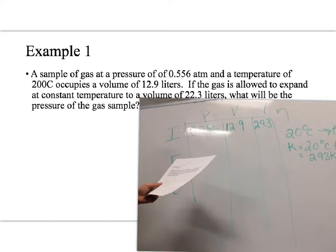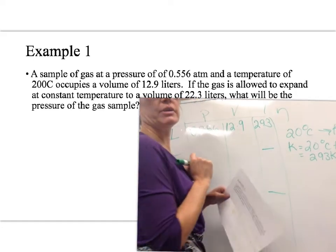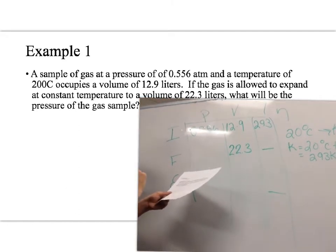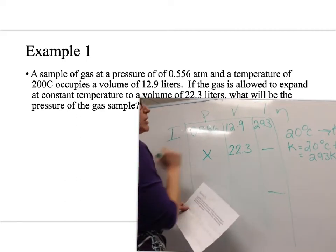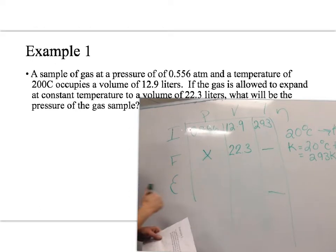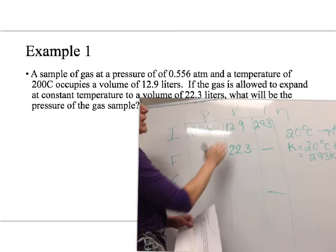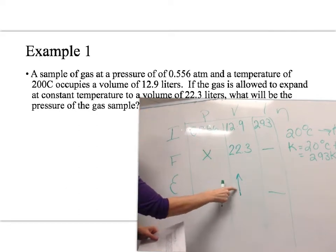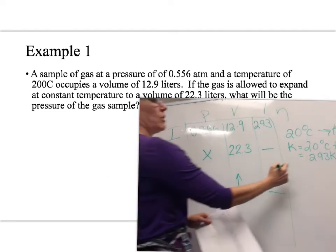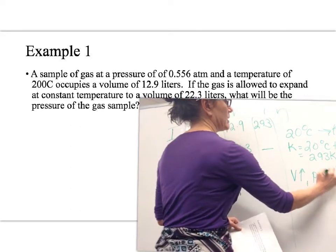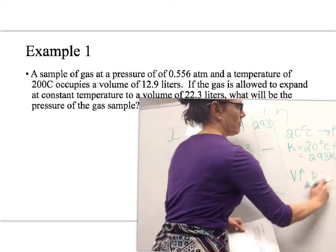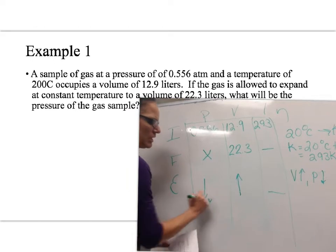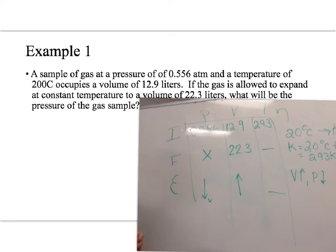The gas is allowed to expand at constant temperature, so temperature will have no effect on the problem. The final volume is 22.3 liters, and we want to find the final pressure. Looking at the effect column: from initial to final, my volume is increasing, so I draw an up arrow. Because volume and pressure have an inverse relationship, if volume increases then pressure decreases. I draw a down arrow for pressure, noting that volume is causing it to go down.